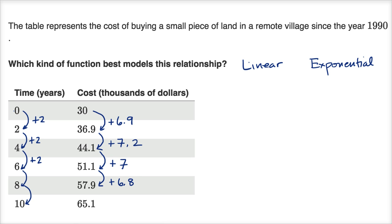And then finally going from 57.9 to 65.1. Let's see, this is almost eight, 7.1. This is what, 7.2 we're adding, plus 7.2.